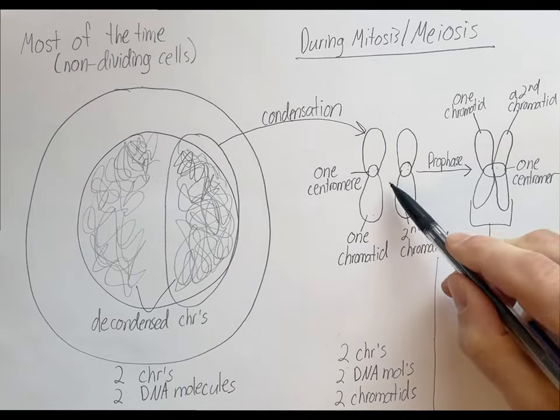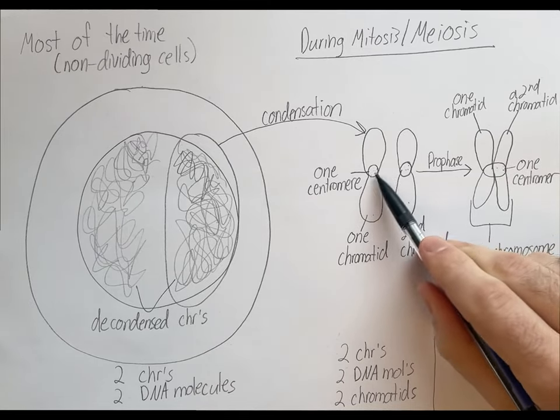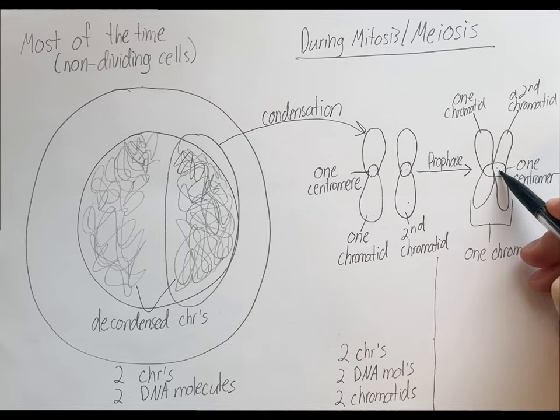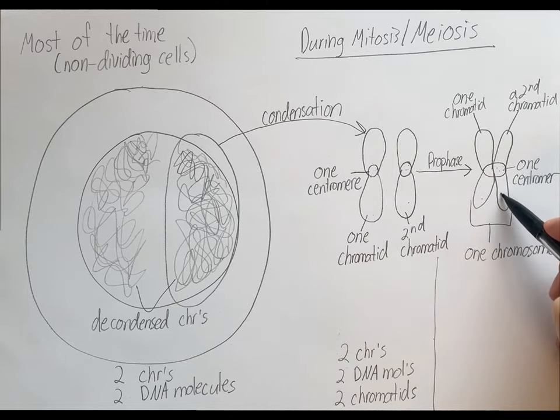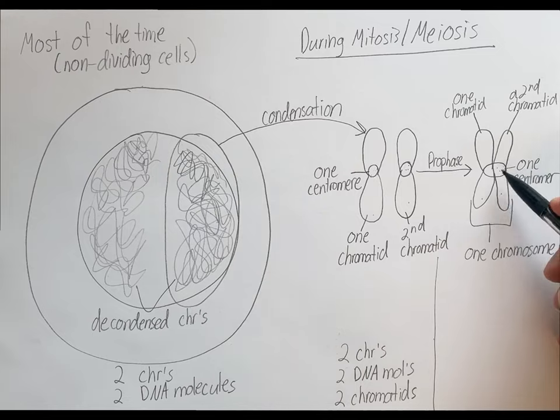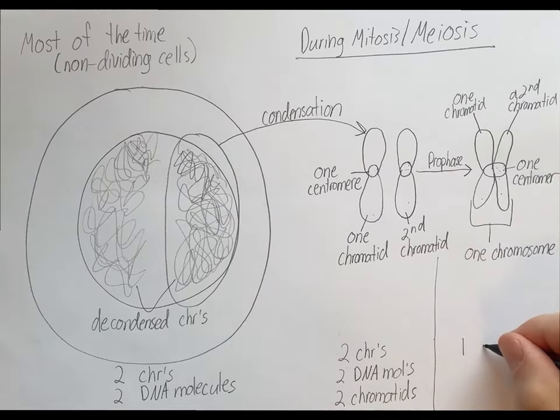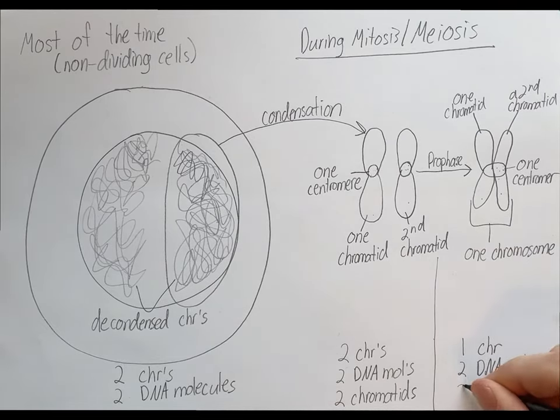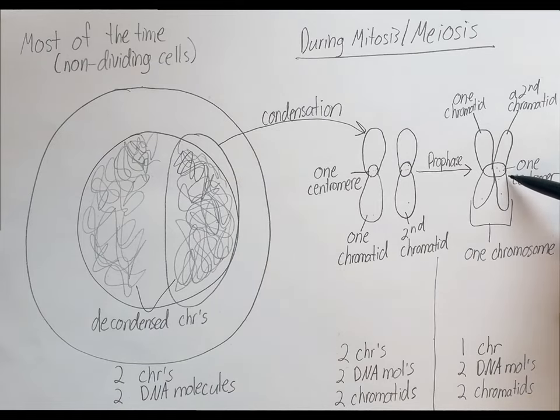So when chromatids pair like this, you go from having two chromosomes to one chromosome, even though the number of chromatids and the number of DNA molecules has not changed. So in this picture, we now have one chromosome, two DNA molecules, and two chromatids. So this structure is now considered a single chromosome. So try to keep this in mind when you encounter problems asking you to keep track of chromosomes, chromatids, and DNA molecules throughout the cell cycle and throughout cell division.